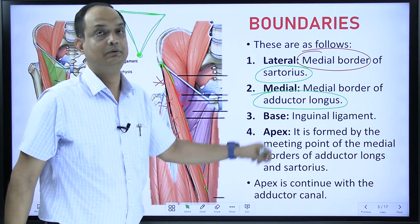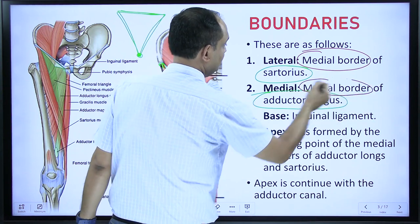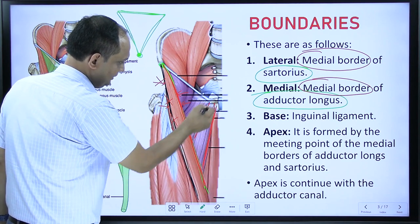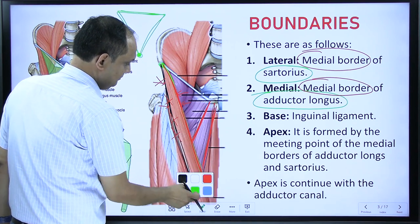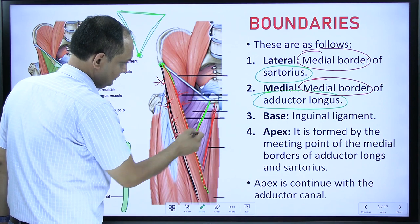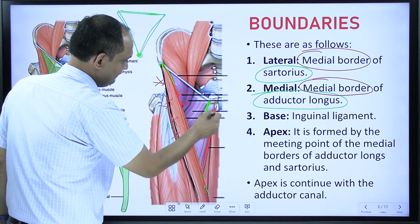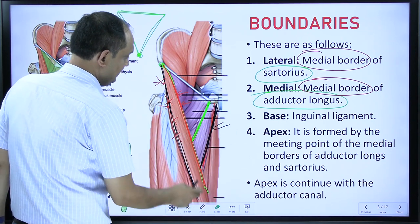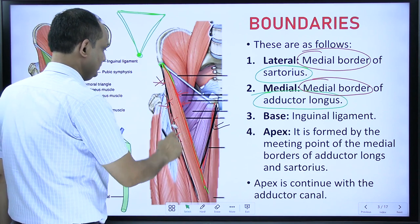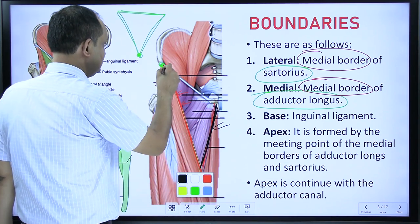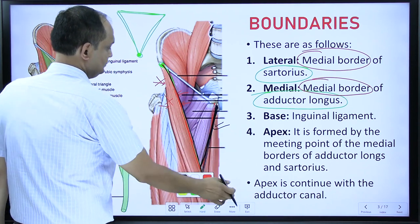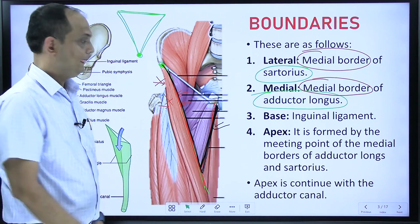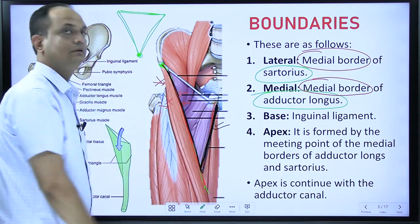The second border is the medial border, formed by the medial border of adductor longus. The adductor longus has two borders — a lateral border and a medial border. We are considering the medial border of adductor longus as the medial boundary of the femoral triangle. So both the medial border of the sartorius and the medial border of adductor longus form the boundaries of the femoral triangle.